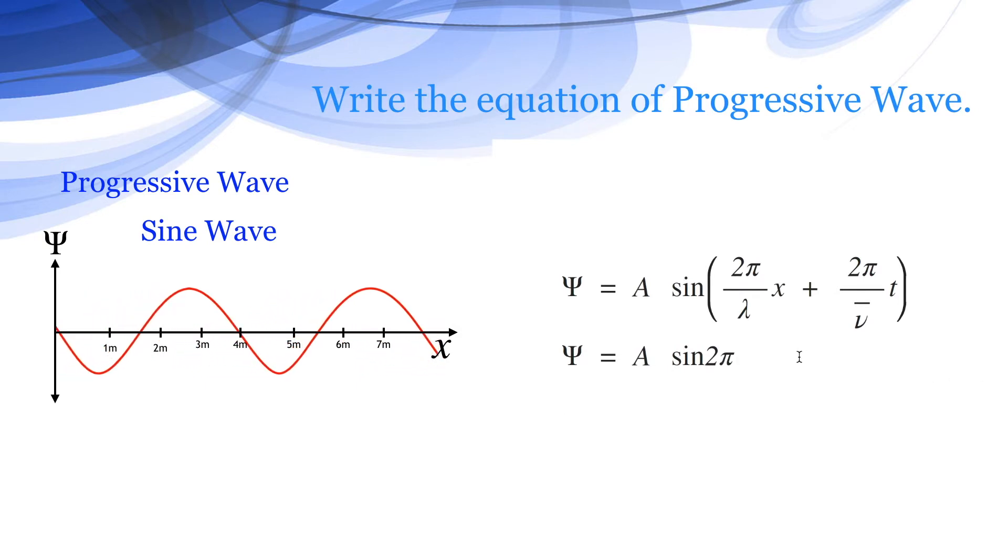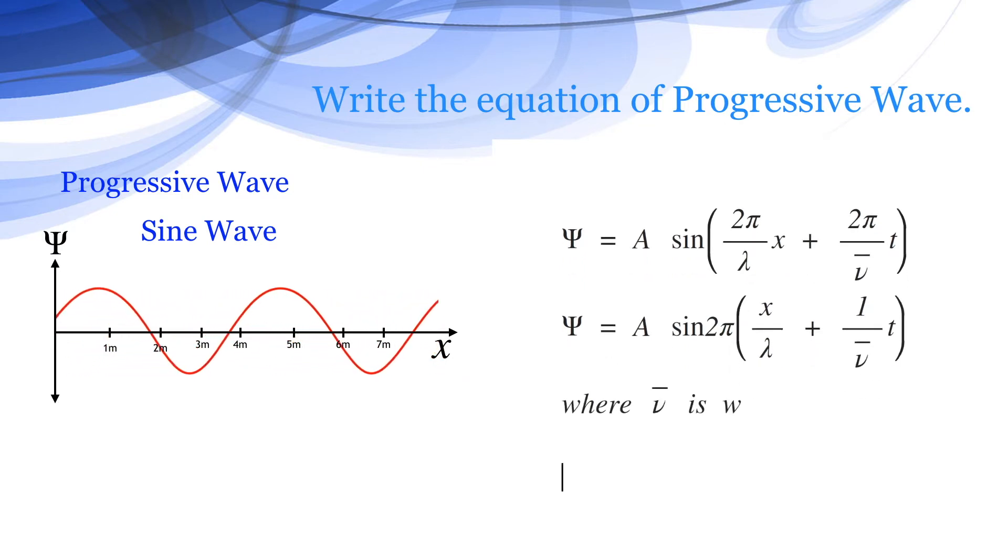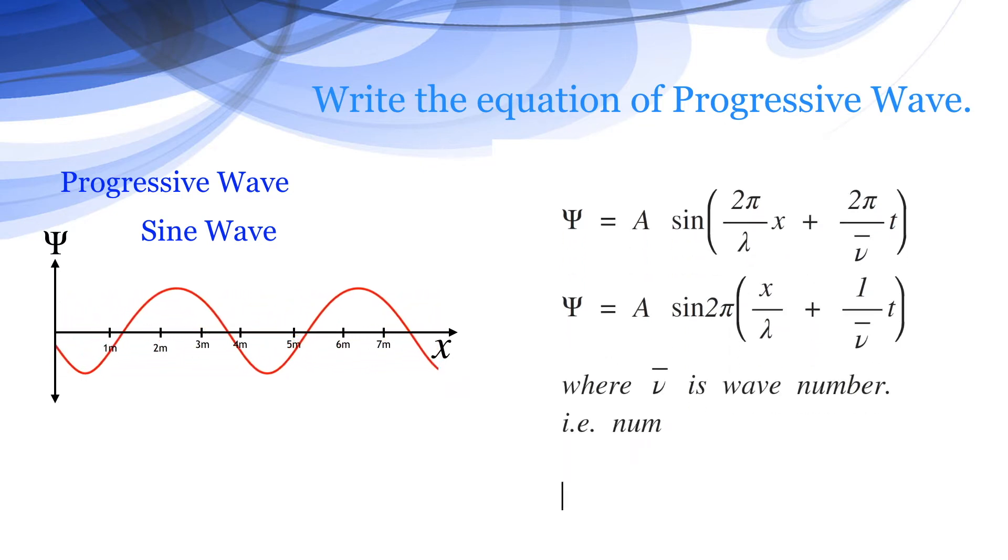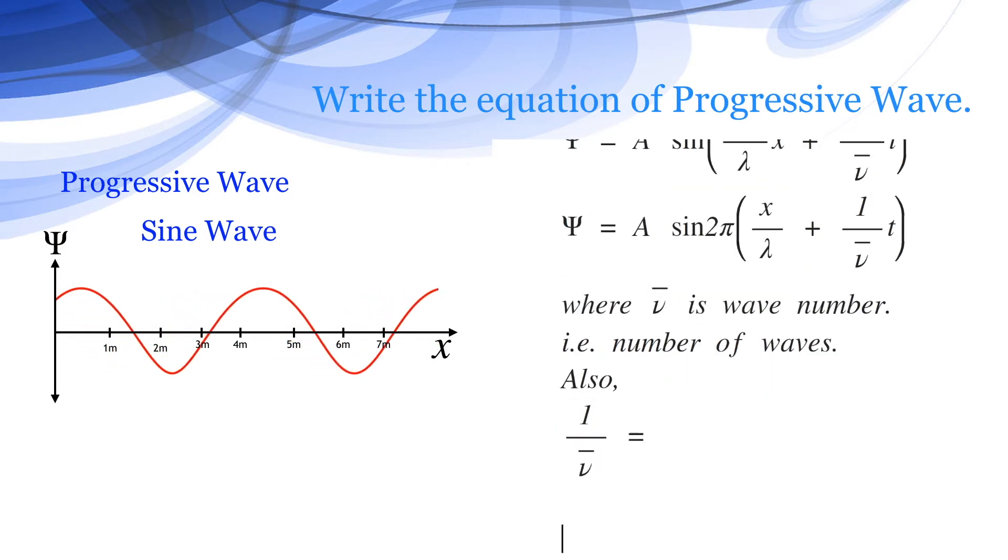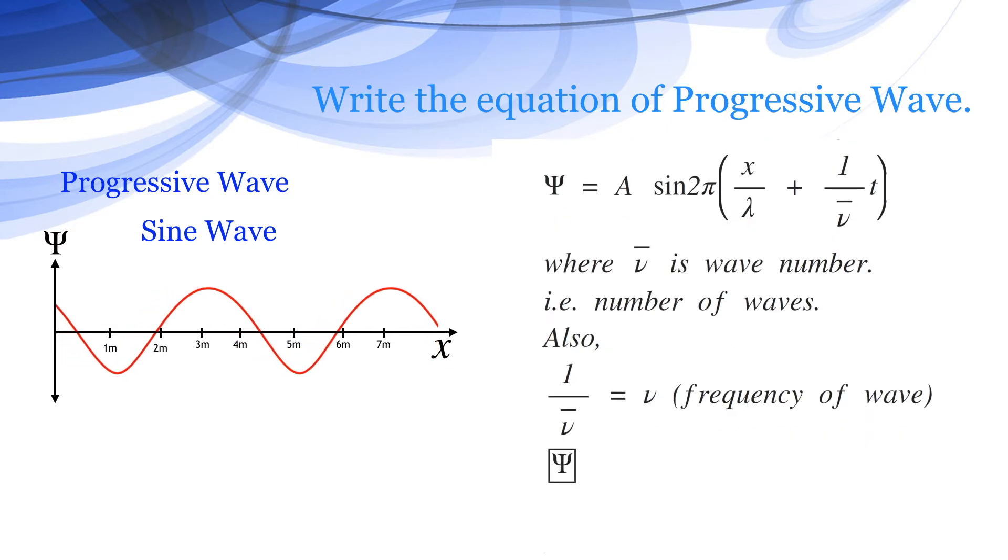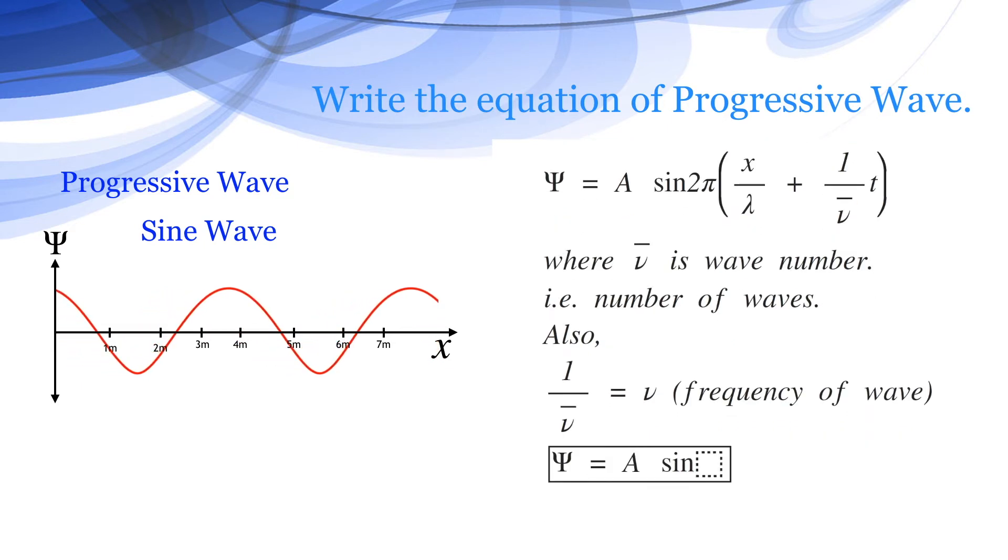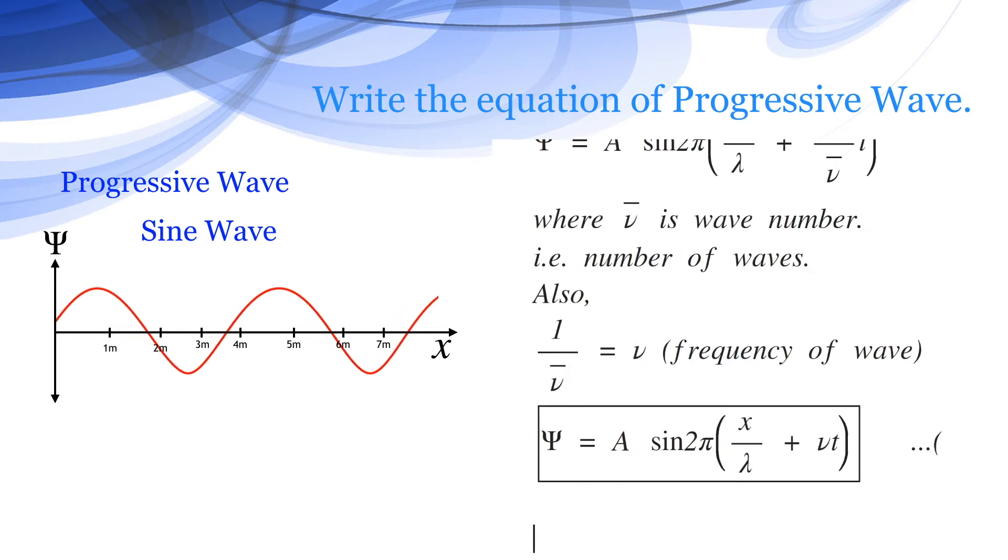Psi becomes A sine of 2π x by λ plus 1 by ν̄ into t, where ν̄ is the wave number, that is total number of the waves. Also, 1 by ν̄ equals ν, that is the frequency of the wave. Therefore, psi becomes A sine of 2π x by λ into ν t. This is final equation of the progressive wave.